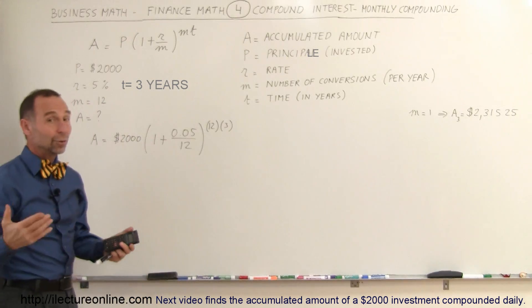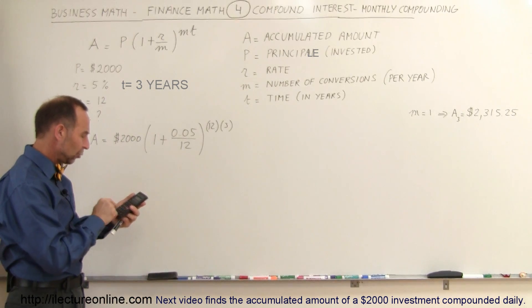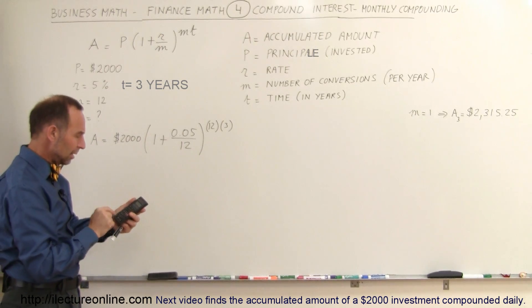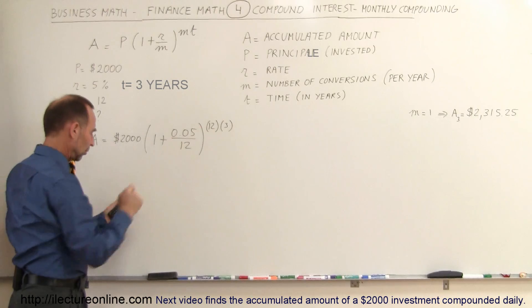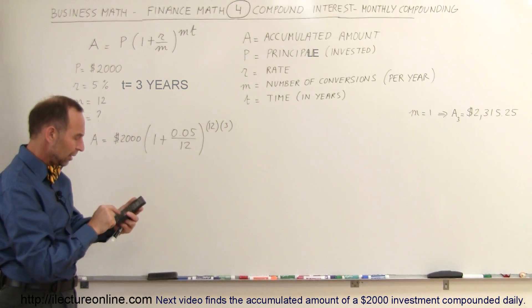You can see why you'd want to use a calculator for that. So we get 0.05 divided by 12. I work from the inside out, so I add that to 1, and then I raise that to the 36th power. So I find my x to the y button, 36.